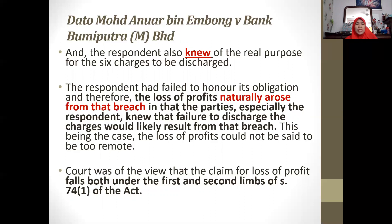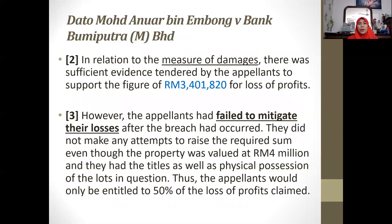The Court of Appeal was of the view that the claim for loss of profit falls under both the first and second limb of Section 74 of the Act — it was something which naturally arose, and the bank had knowledge of the real plan and intention of the appellant when they asked the bank to discharge the charges. The full amount of compensation claimed was RM3.4 million; however, the appellants had failed to mitigate their losses, and because of that failure of mitigation, they were only allowed to claim 50% of the total RM3.4 million.